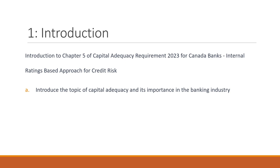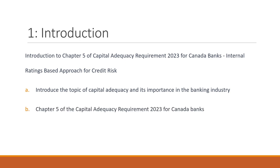Introduction. Capital adequacy refers to the amount of capital that a bank needs to hold in order to absorb potential losses and maintain financial stability. It is a crucial aspect of the banking industry as it helps ensure that banks are able to withstand unexpected events and continue to operate. This chapter provides guidance on how banks should measure and manage credit risk using the Internal Ratings-Based, IRB, approach.